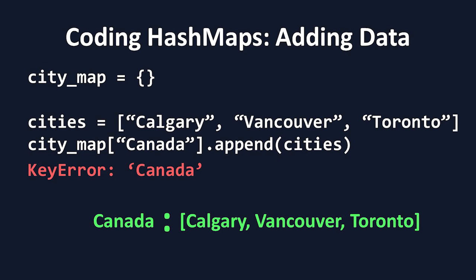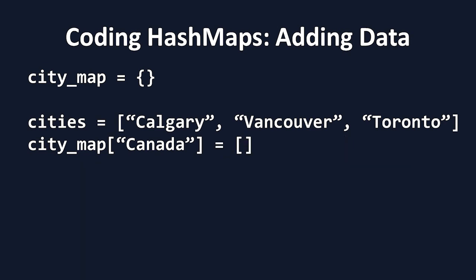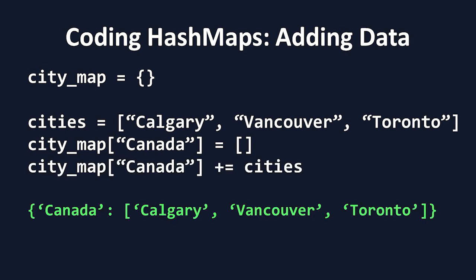Oh no! We got a key error! Why did this happen? This is a very common mistake people make with HashMaps. We tried to assign the three cities to the key of Canada, but that key doesn't exist in our HashMap yet. So we first need to initialize this key. Now we can add these cities to this empty array. And this is what our result will look like after this.